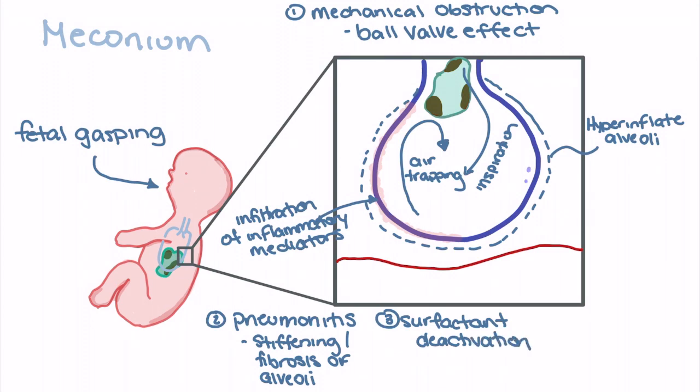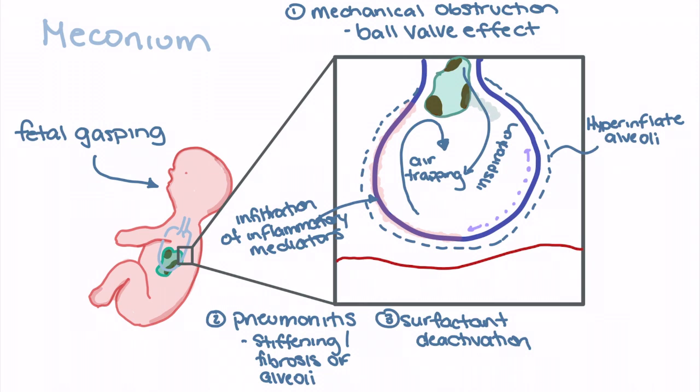As we know, surfactant plays a role in decreasing surface tension within the alveoli, allowing that alveoli to stay open on inspiration.